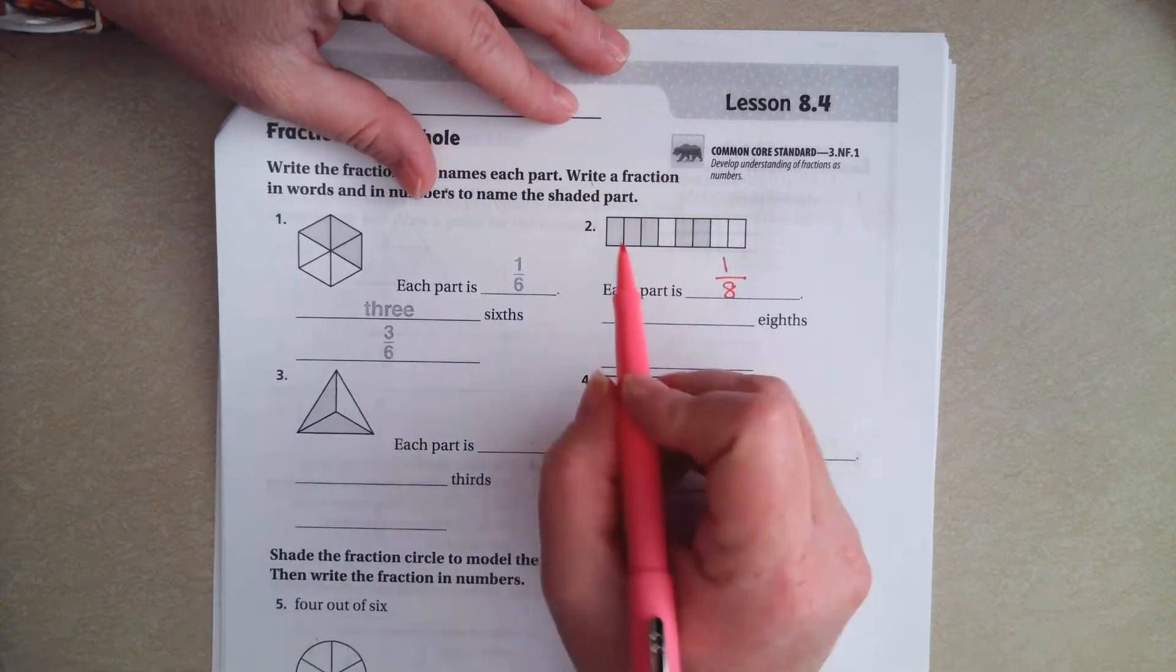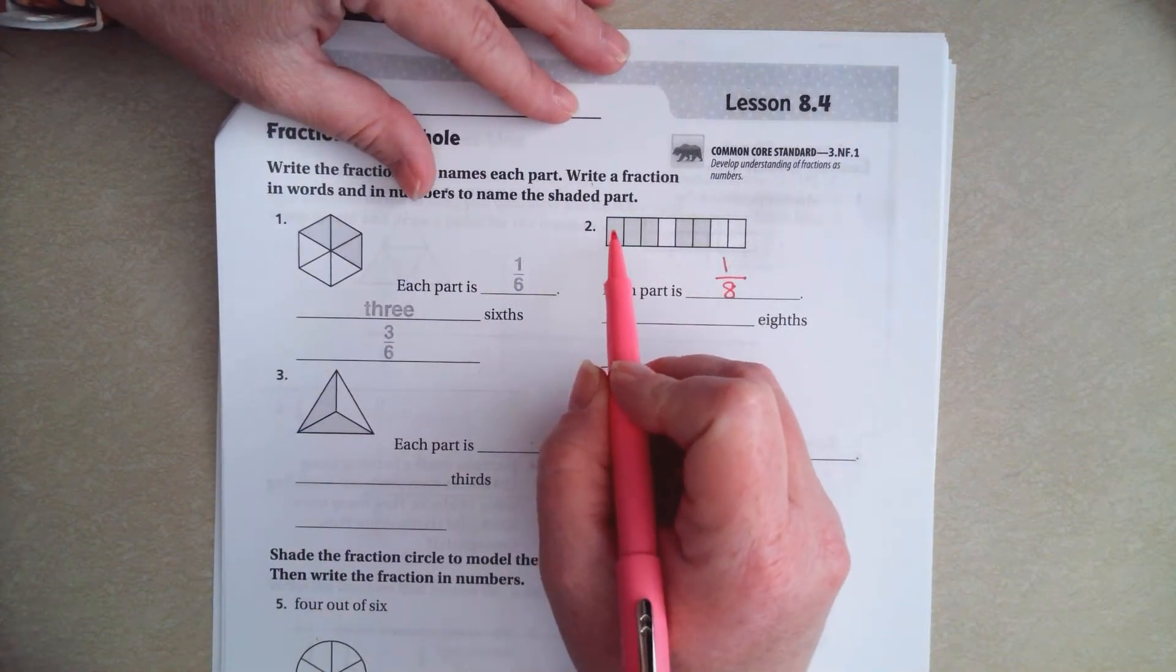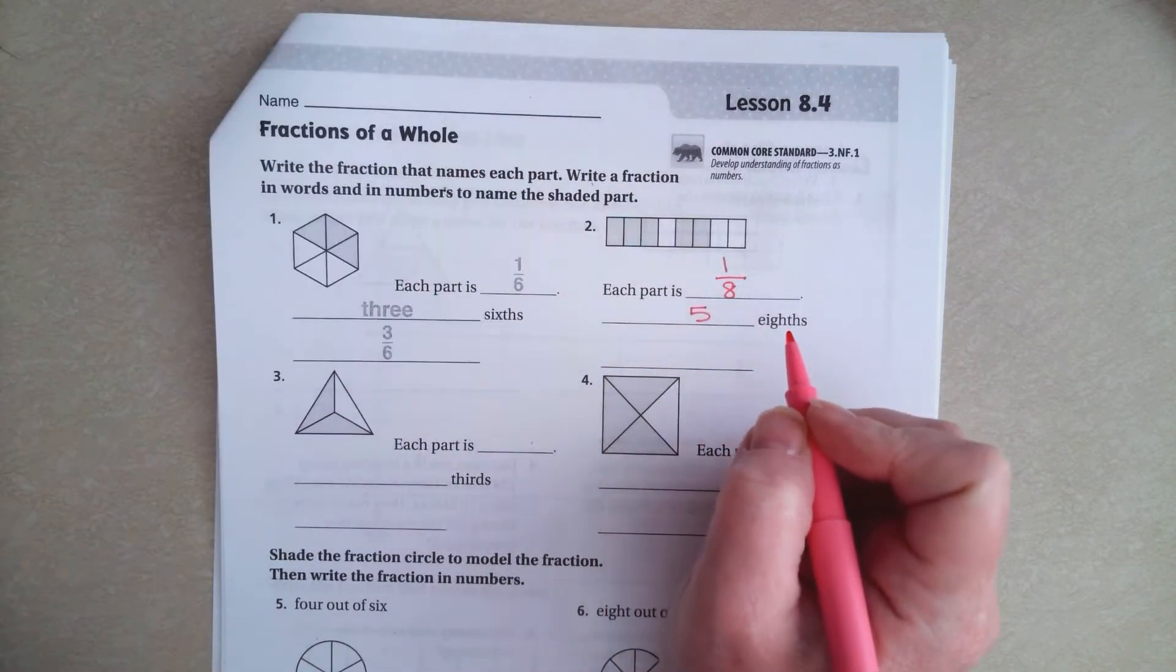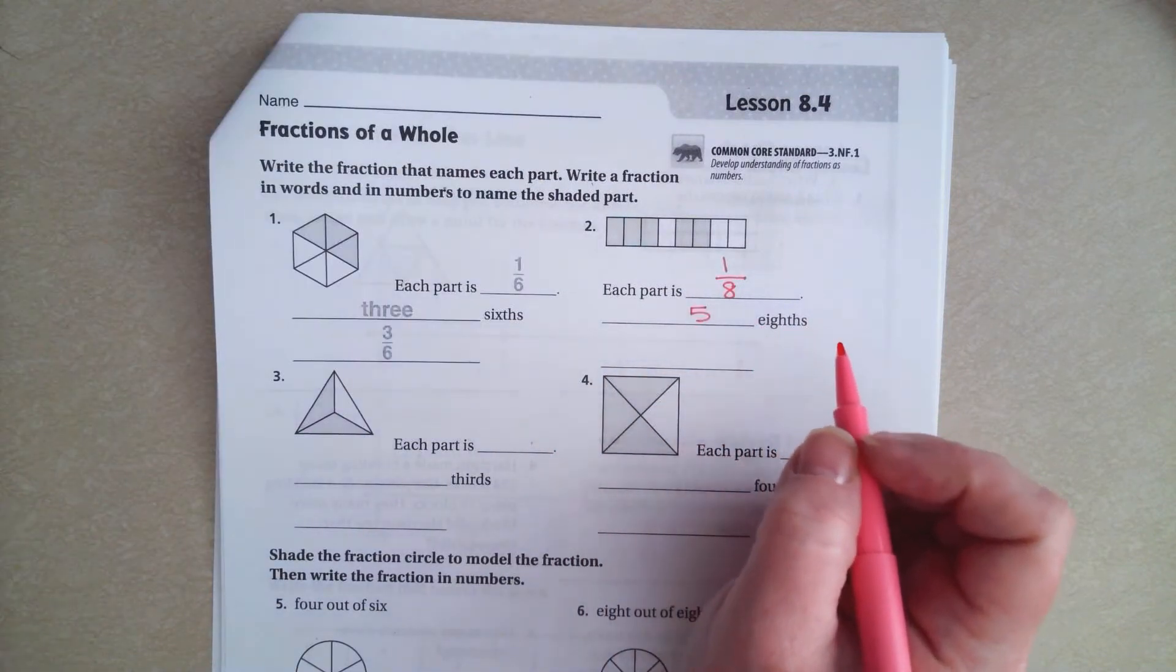So now, how many eighths are colored in? 1, 2, 3, 4, 5. 5 eighths. That easy, guys.